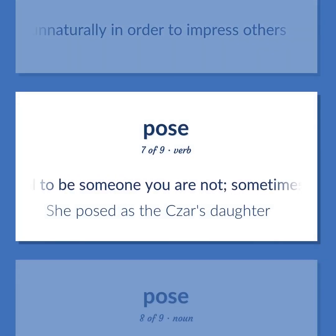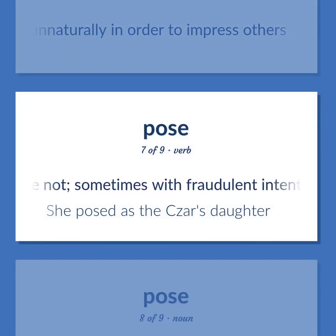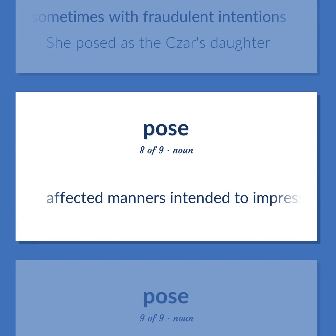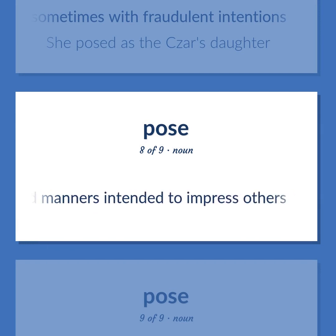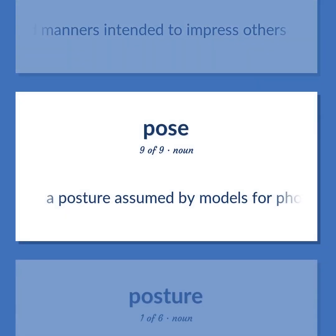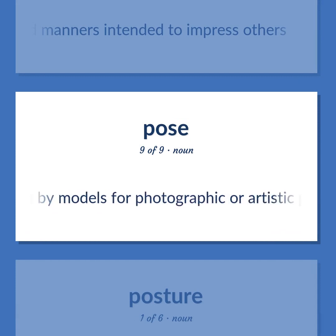Behave affectedly or unnaturally in order to impress others. Pretend to be someone you are not, sometimes with fraudulent intentions. She posed as the Tsar's daughter. Affected manners intended to impress others.